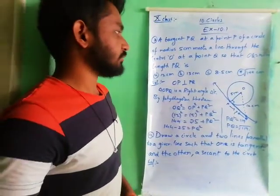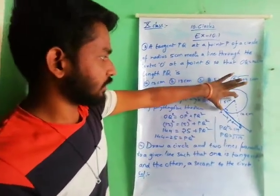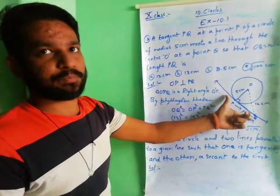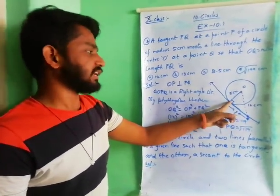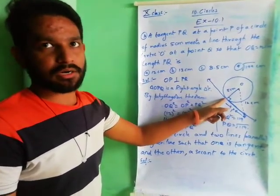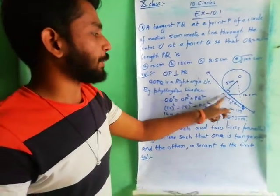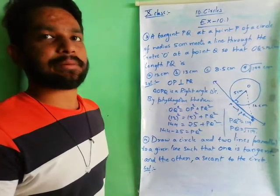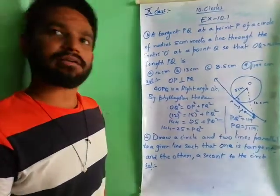So using Theorem 10.1, OP is perpendicular to PQ, making OPQ a right-angled triangle. We know two sides, and by the Pythagoras theorem we find the third side. PQ = √119.